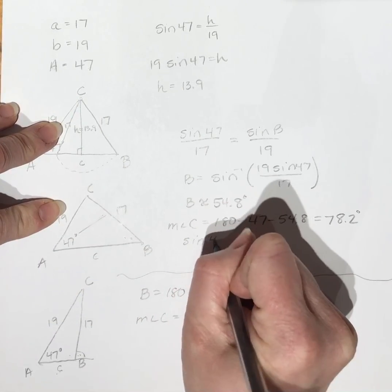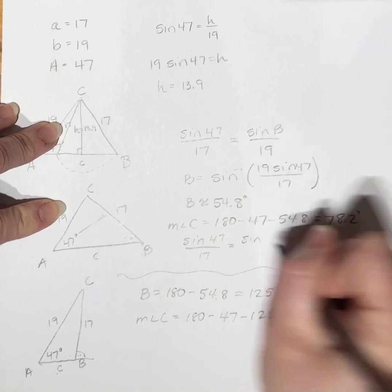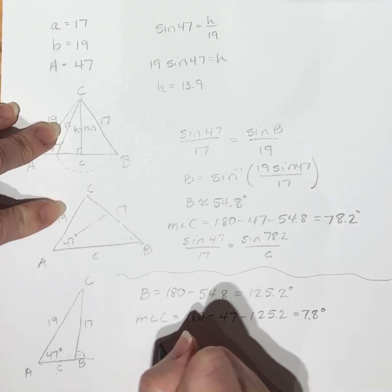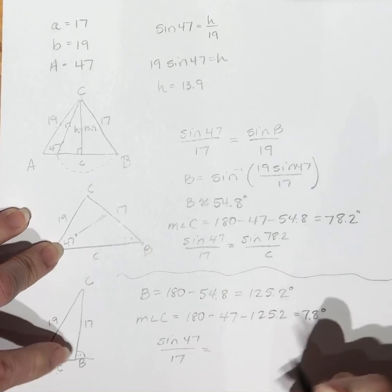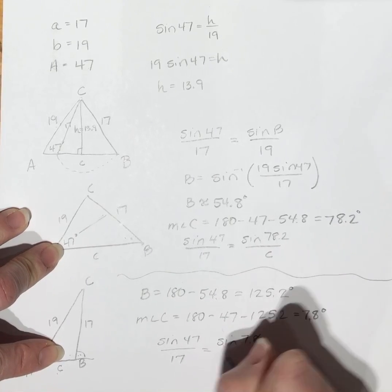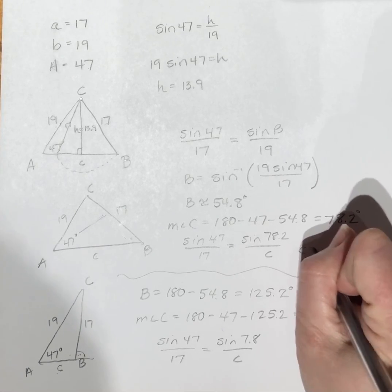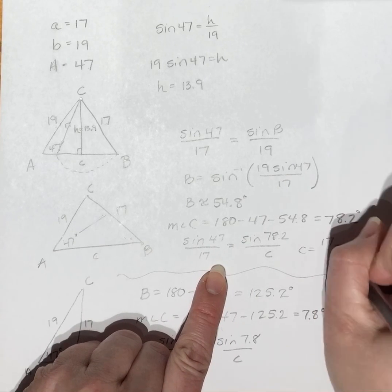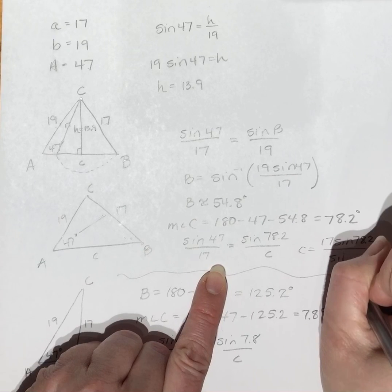I'm going to use this relationship, and then of course I'll use that angle. So sine of 47 over 17 equals sine of 78.2 over c. And here, sine of 47 over 17 will equal sine of 7.8 over c. So here, c will equal 17 times sine of 78.2 divided by sine of 47.